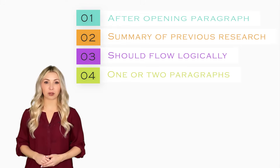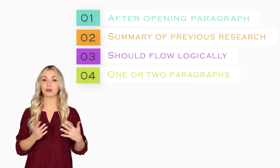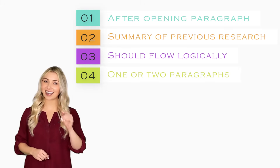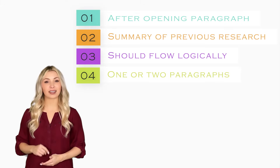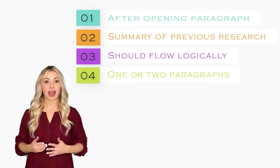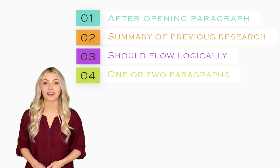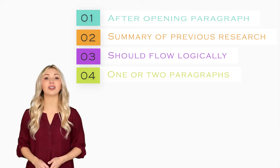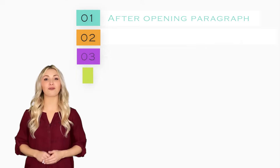The length of the literature review section varies from discipline to discipline. Typically, in a standard research paper, the literature review occupies one or two paragraphs. However, if you are dealing with a topic that requires a strong theoretical foundation, then a significantly longer literature review might be required.